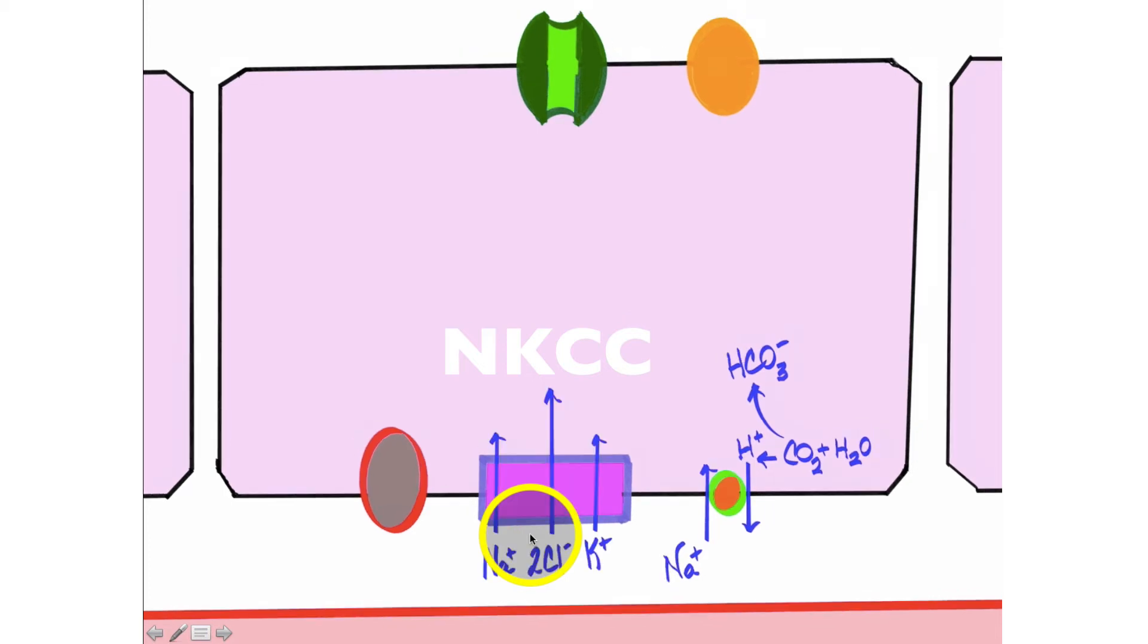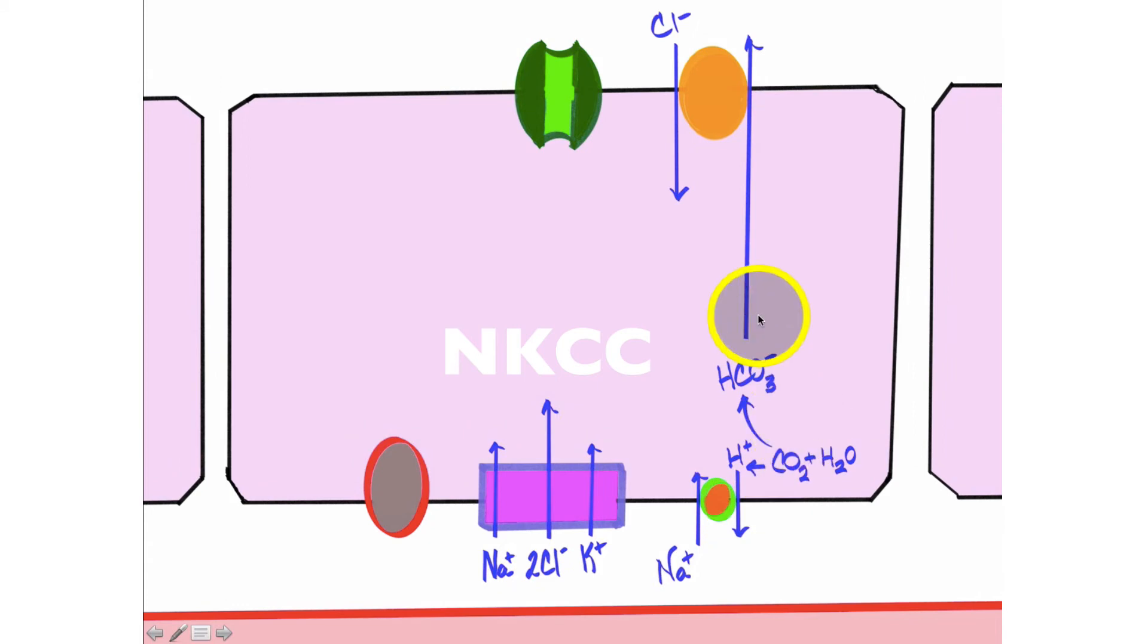From there, we will get this bicarbonate that was produced in this original equation moving into the lumen of the duodenum. And this is one of the key steps right here because we are trying to create an alkaline lumen. We're trying to create a basic region in the duodenum to protect the duodenum of any potential acidic gastric juices that seep into the duodenum from the stomach.